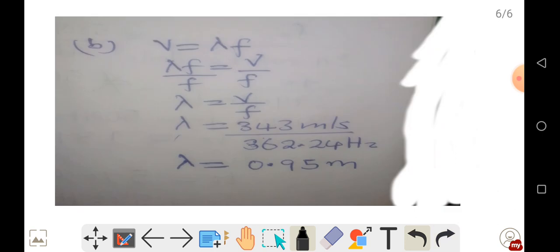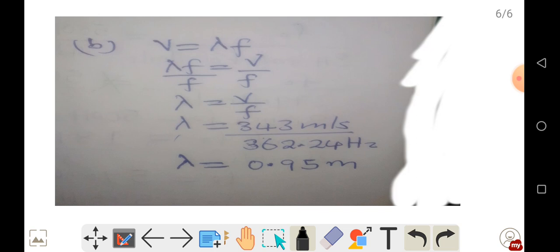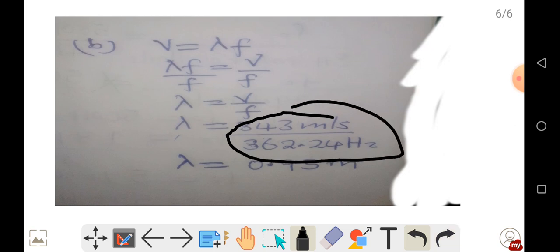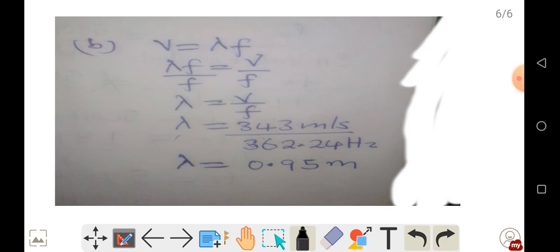For Part B, we need to find the wavelength detected by a person on the platform as the train approaches. Using the expression velocity equals lambda multiplied by frequency, and making wavelength the subject, lambda equals velocity divided by frequency. Substituting the speed of sound in air, 343 meters per second, divided by the observed frequency as the train was approaching, 362.24 Hz, we get the wavelength to be 0.95 meters.